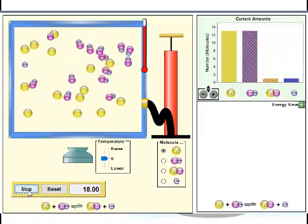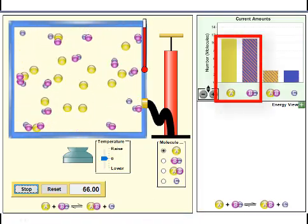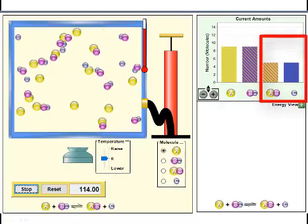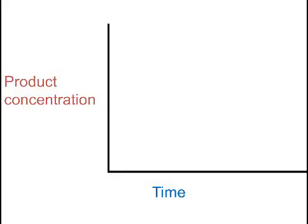As a reaction proceeds, the reactants decrease in concentration and the products increase. Represent what I've just said in this graph. Pause the video until you've done it.